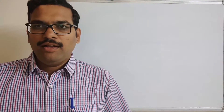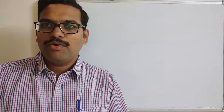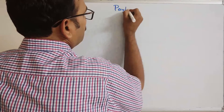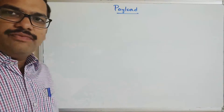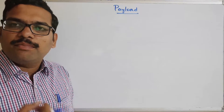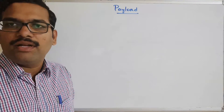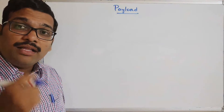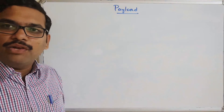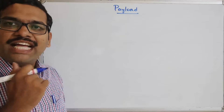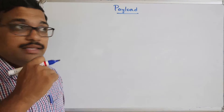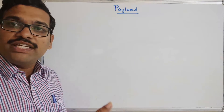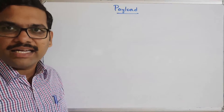Hello friends, welcome back to our channel. In today's session we discuss one more topic in ethical hacking — that is payload. In our previous session we discussed about the exploit, which means the process of taking advantage of any vulnerability of a system, software, hardware, or network. Once that exploitation is done, we have to set the payload. The payload is data transmitted to the victim system — it is a piece of code which gains access to information from the target system.